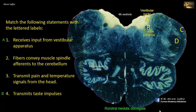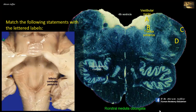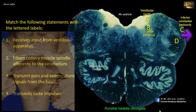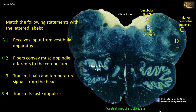Dorsolaterally, the medulla is connected to the cerebellum via the inferior cerebellar peduncle. The inferior cerebellar peduncle is composed mainly of fibers entering the cerebellum, such as the dorsal spinocerebellar tract. Fibers of the dorsal spinocerebellar tract carry proprioceptive information from muscle spindles and Golgi tendon organs of the ipsilateral trunk and lower limb to the cerebellum. Thus C matches with 2: fibers convey muscle spindle afferents to the cerebellum.